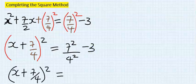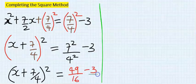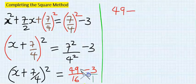We get 49 over 16 minus three. Multiplying through, we get 49 minus 48 over 16, which gives us 1 over 16.